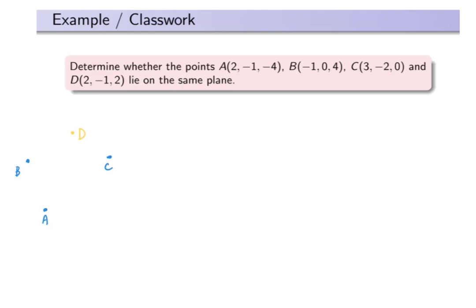A vector is formed by an initial point and a terminal point. As we are given four points, we can treat one of the points as a common initial point and the other three as terminal points, forming three vectors with arrow tails touching together. We know that the absolute value of the triple scalar product of three vectors represents the volume of a parallelepiped with these three vectors as adjacent edges. The absolute value of the triple scalar product is zero if and only if the three vectors are coplanar, which also means the four points lie on the same plane. Therefore, we can use the triple scalar product to determine whether the four points are coplanar.